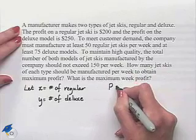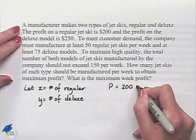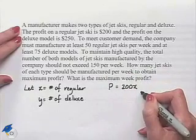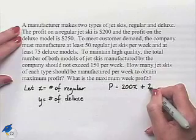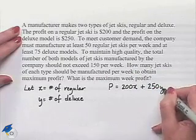We're going to find that profit would have to equal $200 multiplied times the number of regular jet skis, which would be times X, plus $250 multiplied times Y.